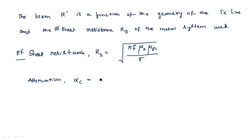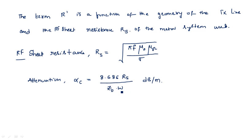The attenuation parameter alpha C equals 8.686 times RS divided by Z naught times W, in units of decibels per meter. Here RS is the RF sheet resistance in ohms, Z naught is the characteristic impedance of the microstrip transmission line in ohms, and W is the width in meters. The ohms cancel, leaving decibels per meter as the unit for alpha C.